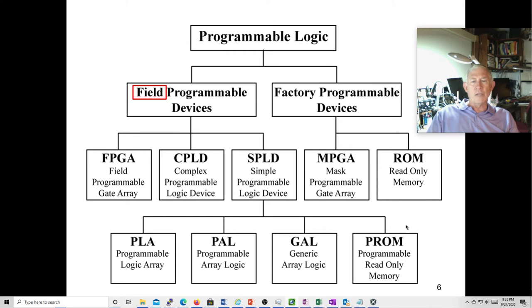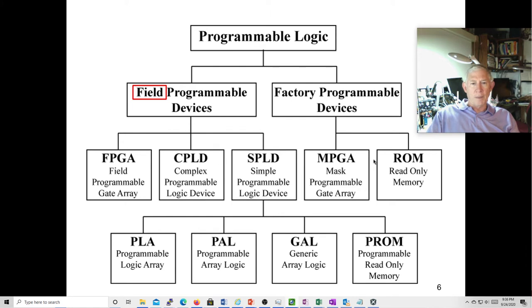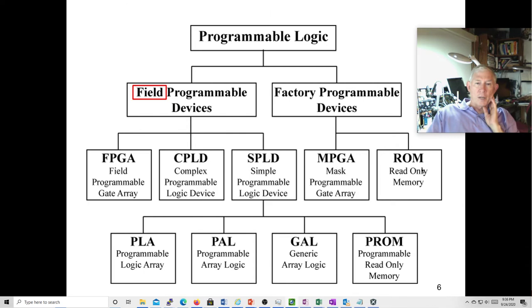Mass programmable gate arrays and read-only memories are all pretty much done with hardware description languages now. These are factory programmed; these are field programmed. Mostly I think we're using FPGAs and CPLDs. The mass programmable gate array is still an option, and we also have the ability to factory-program ROMs, which makes them cheaper than ROMs you can field program — though we have plenty of those too.